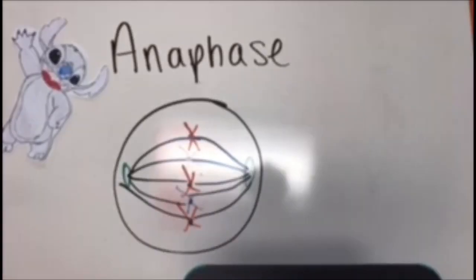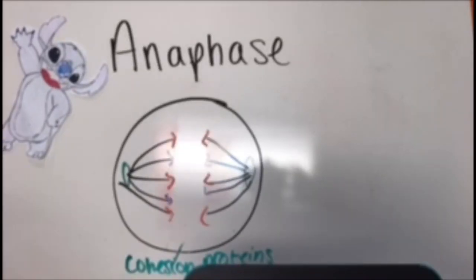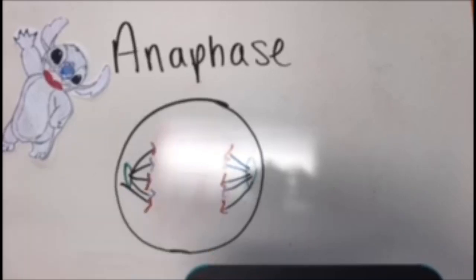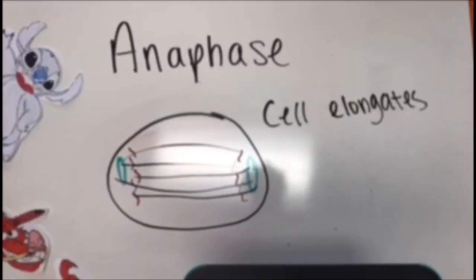Next is anaphase. In anaphase, proteins known as cohesin proteins that are binding the sister chromatids together are broken down. The sister chromatids are now known as chromosomes and are pulled to the opposite poles of the cell. The cell is elongated as a result because of the non-kinetochore spindle fibers lengthening in this step. It reminds me of an eclair. Sweet!